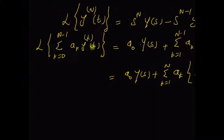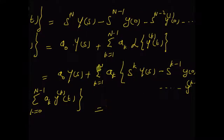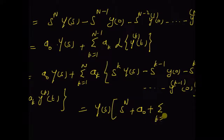Now we can actually combine the Laplace transforms of these two terms. That is the sum of the Laplace transform of the nth derivative and that of the weighted sum of the kth derivatives can be combined as follows. We basically add all the terms that have Y(s) as a common term. So the first one is Y(s) multiplied by s^n plus a_0 plus the sum k equal to 1 to n, a_k s^k.